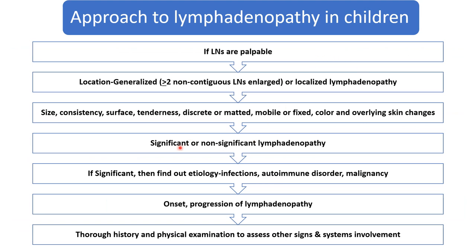After labeling as significant or non-significant: if you find it is significant, you have to find the etiology — either infection, autoimmune disorder, or malignancy. Then check the onset and progression of the lymphadenopathy. According to this, label it as acute, subacute, or chronic lymphadenopathy. Always take a thorough history and do a proper physical examination, because other signs and systemic examination will give you clues about the various conditions.